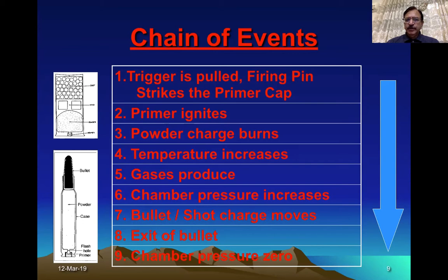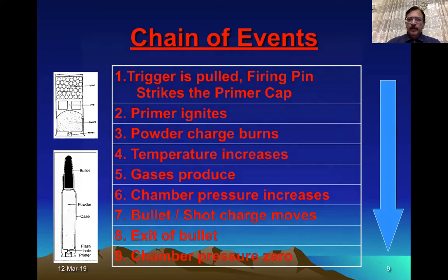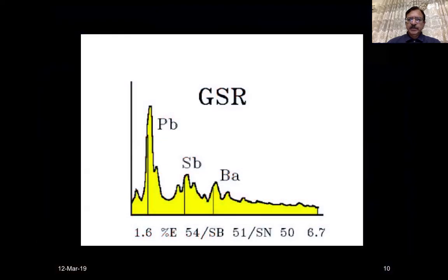After the exit of the bullet, the pressure drops and becomes almost zero. This is the chain of events occurring within the chamber: the trigger is pulled, releasing the firing pin, which strikes at the base of the cartridge at the primer cap, where the primer ignites. The flames then ignite the main powder charge, gases start producing, and a tremendous amount of energy and pressure expels the bullet or pellets out, after which the pressure falls. This is shown graphically — the pressure rises initially and then drops off after the release of the bullet.